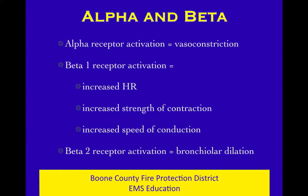Beta-1 receptor activation causes an increase in heart rate, an increase in strength of contraction, and an increase in speed of conduction of impulses in the cardiac conduction system. Beta-2 receptor activation causes bronchial dilation. When you put beta-1 and beta-2 together, they work great if you're going to fight or run, because you want your heart to beat faster and stronger, maximum conduction in the cardiac conduction system, and your bronchials open so you can take in more air. One heart, two lungs — beta-1, beta-2. Flashcard stuff.